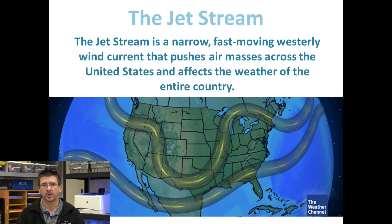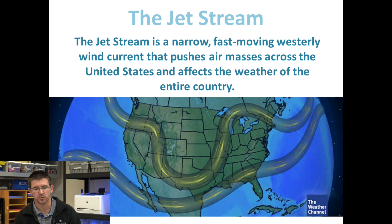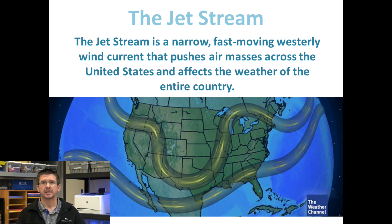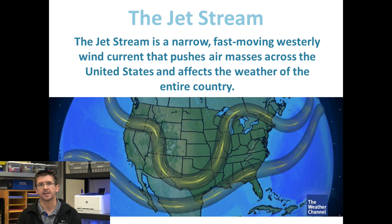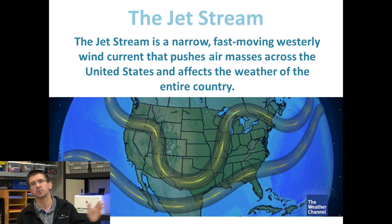The jet stream is a very important westerly air current in the United States. It's a fairly narrow but very fast-moving air current that's pretty high up in the atmosphere, and it pushes the weather we have across the United States. Being on the east coast, if we look at what's happening to the west, the jet stream over a period of maybe a few hours to a few days will move that weather toward us.